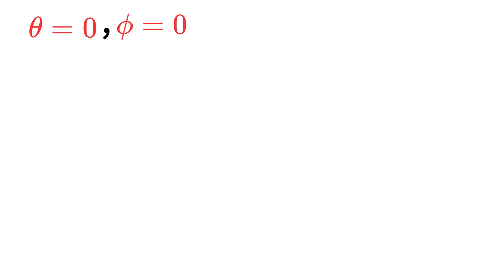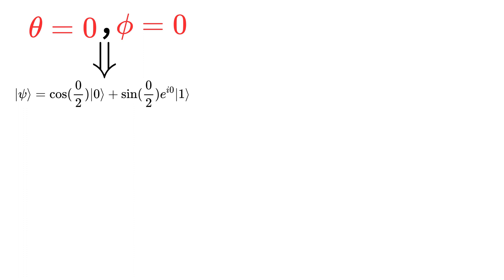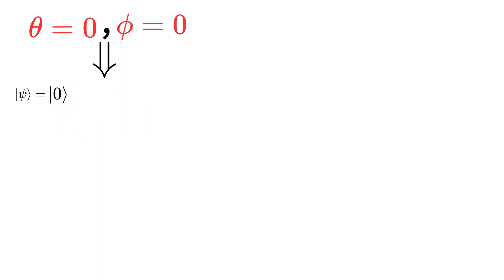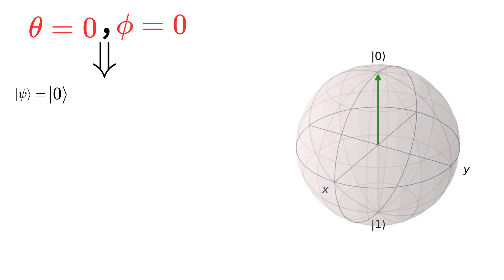If we put theta equal to 0 and phi equal to 0, we have cosine of 0 in the ket 0 term plus sine of 0 times e to the i*0 in the ket 1 term. Since cosine of 0 equals 1 and sine of 0 equals 0, the second term vanishes and we only have the ket 0 state, which is the north pole of the Bloch sphere.